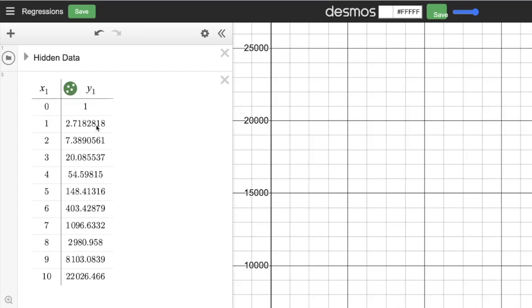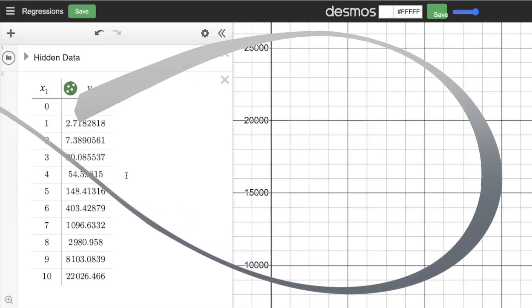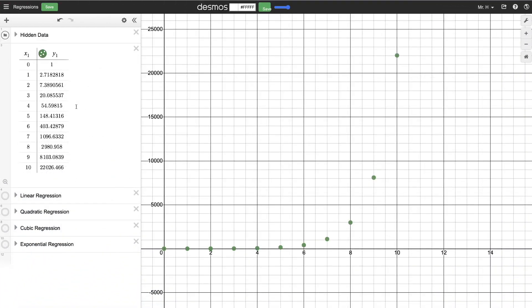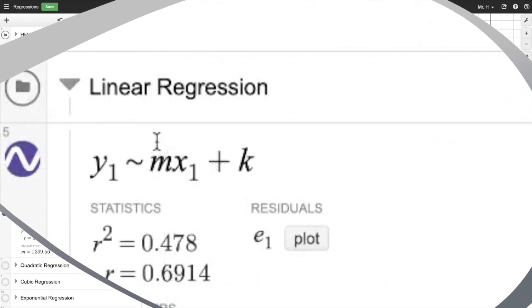you are probably going to want to find the line of best fit. So look down here where I have linear regression. In this folder it's going to show you what you type in to do that line of best fit. So check this out.